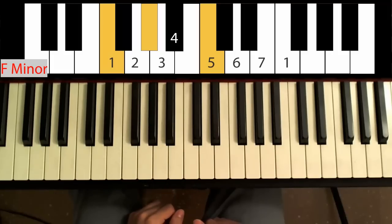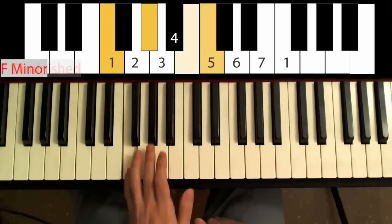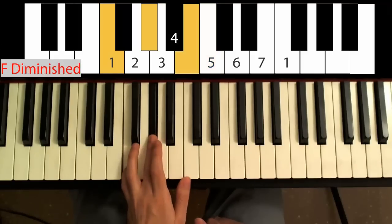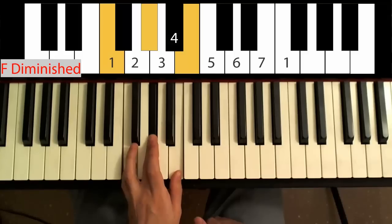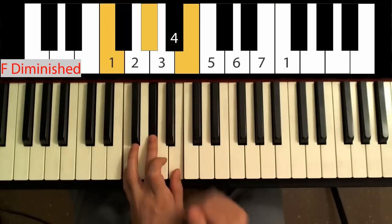To play the diminished triad, play the 1st, flat 3rd and flat 5th. So this is the F diminished triad.